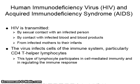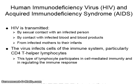HIV is transmitted by sexual contact with an infected person, by contact with infected blood and blood products, and from infected mothers to their infants. The virus infects cells of the immune system, particularly the CD4 T helper lymphocytes.